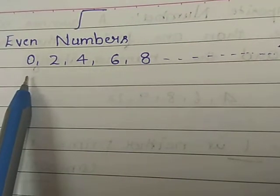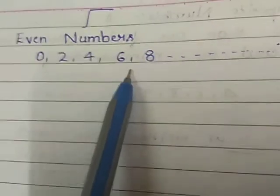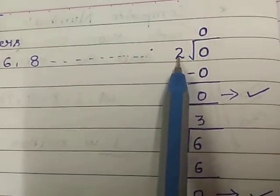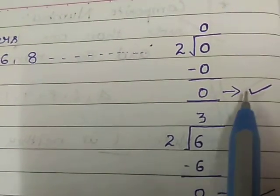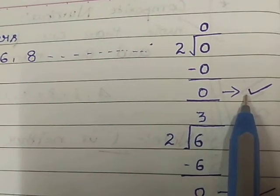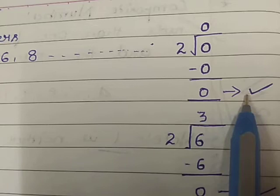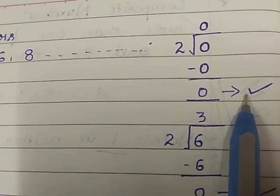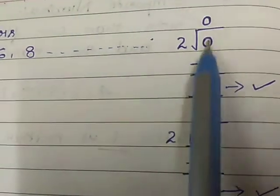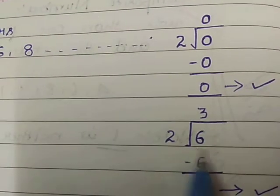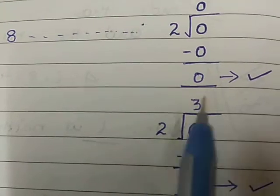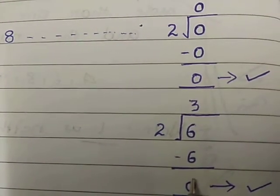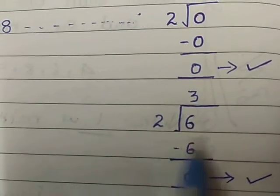Let us check which numbers are divisible by 2 — whether they leave a remainder or not. I have taken 0: 2 times 0 is 0, and the remainder is 0. Since the definition of an even number is any number divisible by 2 without leaving a remainder, 0 is an even number. Next, taking 6: 2 times 3 is 6, and the remainder is 0. So 6 is also an even number.